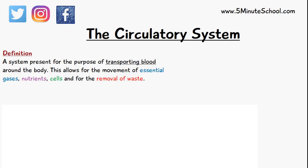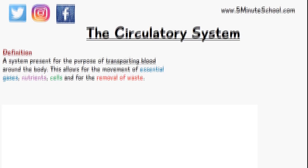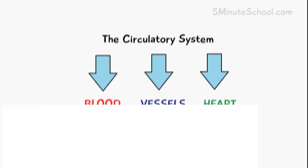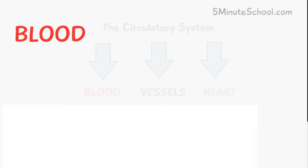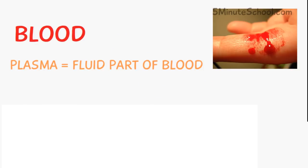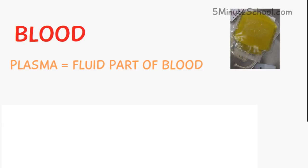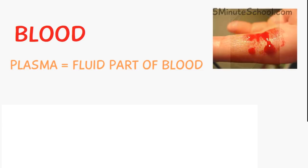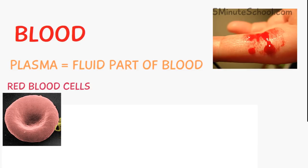We can divide the circulatory system into three components: blood, blood vessels, and the heart. Blood consists of plasma, which is a yellowish liquid, and it has many cells suspended inside of it. The main one being red blood cells, which is what gives it its red color, but there are also a lot of other cells.